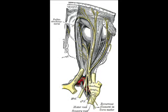It then divides into two branches which enter the orbit through the superior orbital fissure between the two heads of the lateral rectus. Here the nerve is placed below the trochlear nerve and the frontal and lacrimal branches of the ophthalmic nerve, while the nasociliary nerve is placed between its two rami: the superior branch and the inferior branch of the oculomotor nerve.